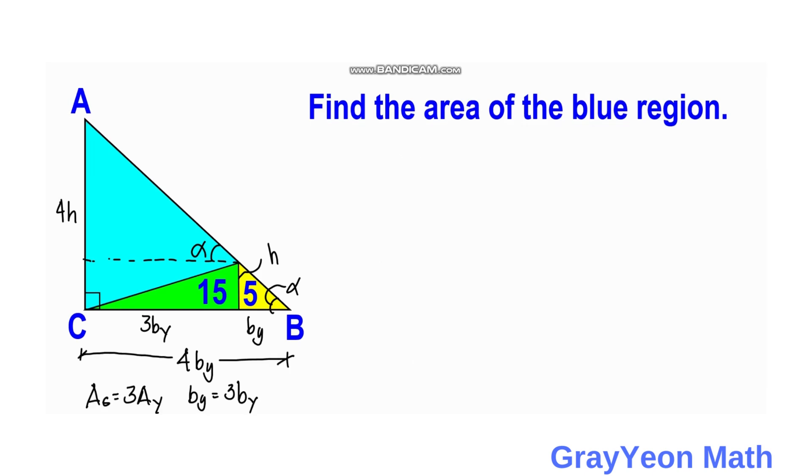Okay, so next is we compare the area of this triangle ABC and the yellow triangle. And as we noticed they are similar triangles. So area of ABC is equal to one-half times the base which is 4by and the height which is 4h.